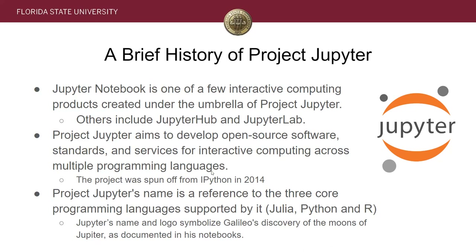Project Jupyter's name is actually a reference to the three core programming languages it supports: Julia, Python, and R — so J-P-R got that sound of Jupiter. The logo actually symbolizes Galileo's discovery of the moons of Jupiter as documented in his notebook. It's a nice analogy of symbolism.